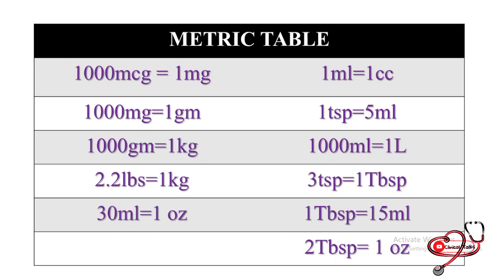2.2 pounds equals one kilogram. 30 milliliters equals one ounce. One milliliter equals one cc, one teaspoon equals five milliliters, and one thousand milliliters equals one liter. Three teaspoons equals one tablespoon.